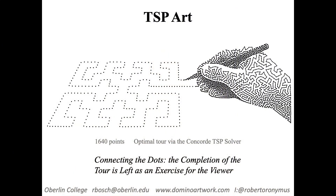This shows part of an optimal tour through these 1,640 points. I obtained this with some really nice software written by Bill Cook and others at the University of Waterloo. But I didn't draw every single line segment of the tour — hence the title 'Connecting the Dots.' The completion of the tour is left as an exercise for the viewer. It's not that hard.